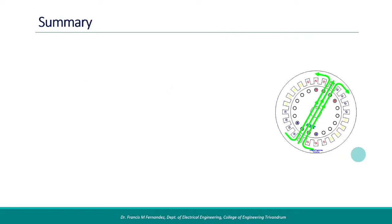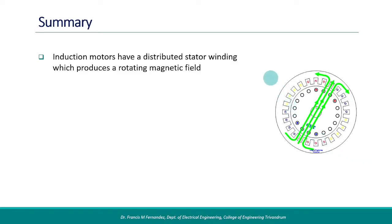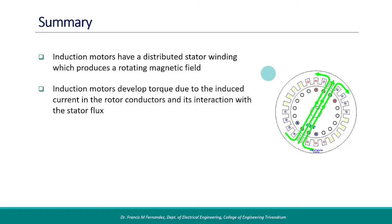Here is a summary of points about the principle of operation of induction motors. Induction motors have a distributed stator winding which produces a rotating magnetic field. Induction motors develop torque due to the induced current in the rotor conductors and its interaction with the stator flux.